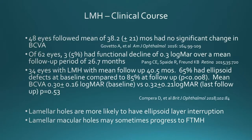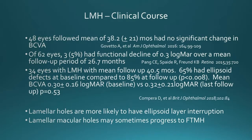The clinical course of lamellar holes is relatively good for visual acuity. Papers presenting the natural history show that most eyes did not have a significant decline in visual acuity. In Pang's series, only 5% had a decline of more than two lines of vision over a mean period of over two years. There is gradual progression of the foveal anatomy; however, visual acuity followed over three or more years did not show any significant change. Nevertheless, lamellar holes are more likely to have ellipsoid layer interruption, which often accounts for reduced vision, and lamellar holes may sometimes progress to full thickness macular holes.